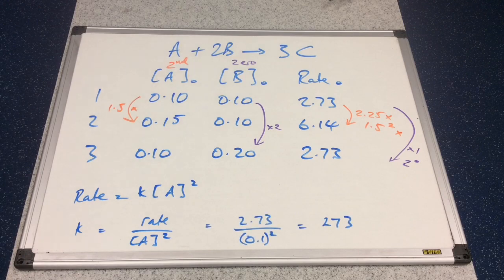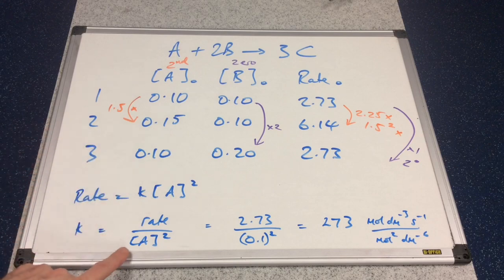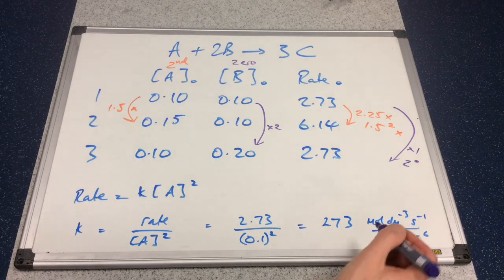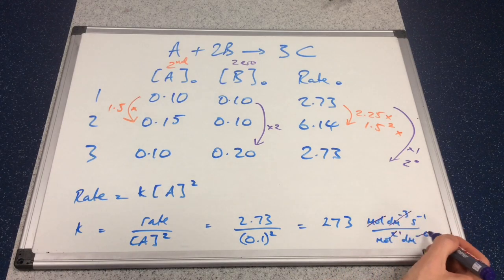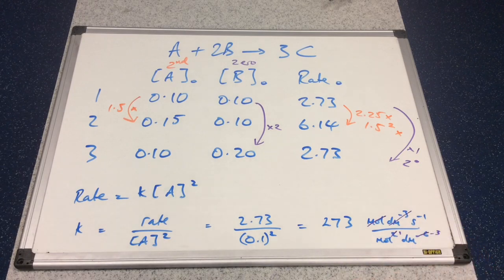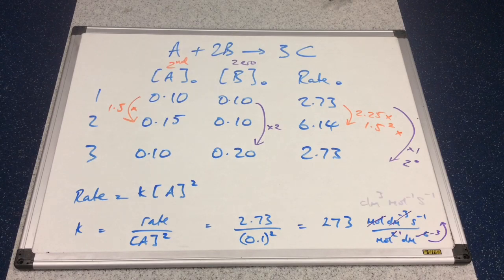I'm getting an answer of 273. Now for the units: we have mol dm⁻³ s⁻¹ on top from the rate, divided by concentration squared which is mol² dm⁻⁶. Cancelling: one mole cancels leaving mol, and dm⁻³ cancels leaving dm⁻³. Dragging these up to the top gives dm³ mol⁻¹ s⁻¹.